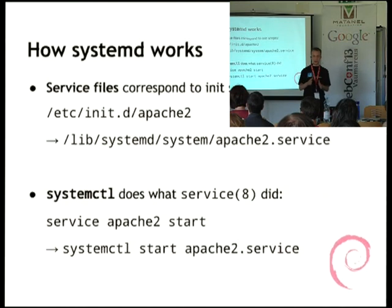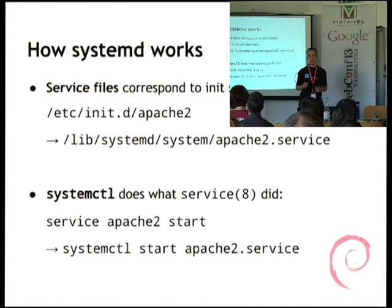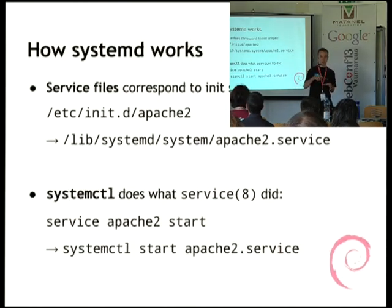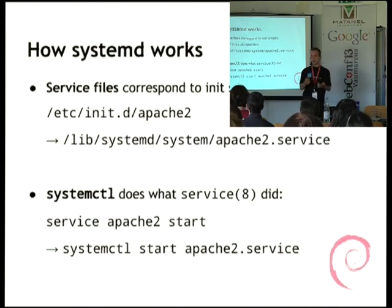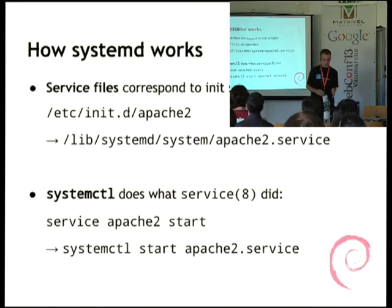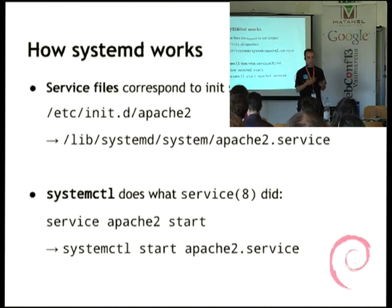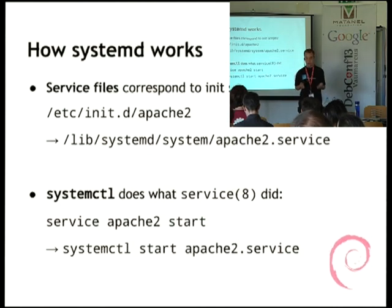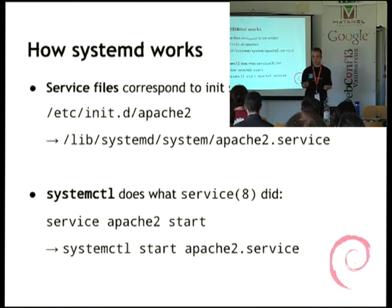To make sure systemd uses your service file and not the old init script, make sure the name is correct. There are also mechanisms for name transitions — if you've adopted the upstream name, you can have a compatibility symlink. And essentially, systemctl does what the service command did. So if you had 'service apache2 start', you would use 'systemctl start apache2.service'. In recent versions you can even skip the .service suffix, so it would just be 'systemctl start apache2'.